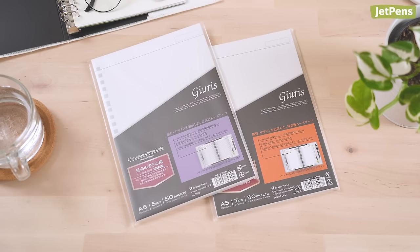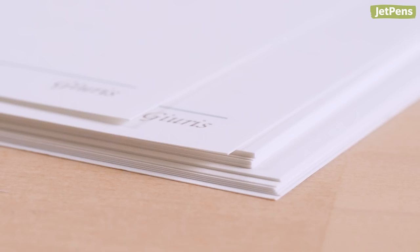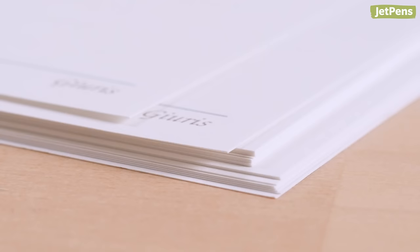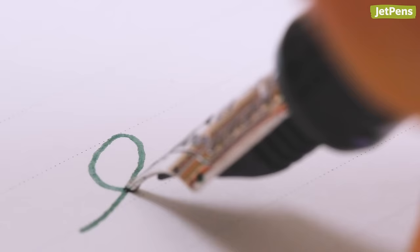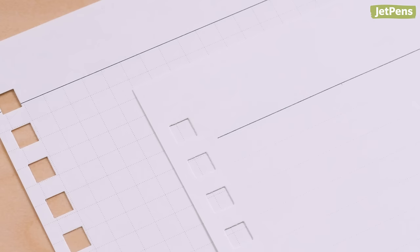A luxurious binder like the Giudis deserves some equally fancy paper. Weighing in at 90 GSM, Maruman's Giudis paper pairs perfectly with fountain pen inks. It's available in graph and line sheet styles.